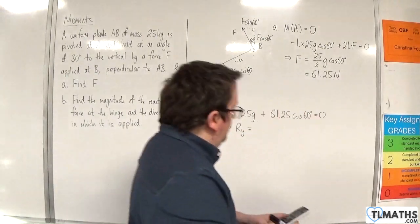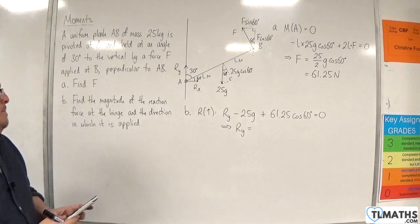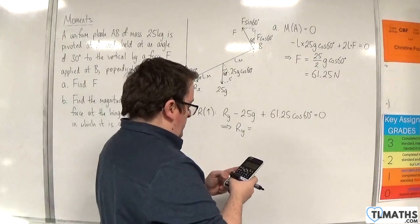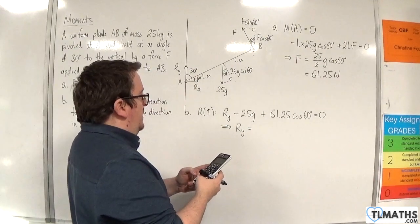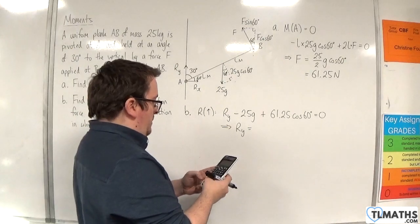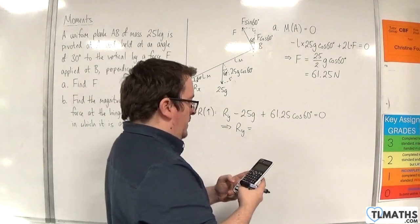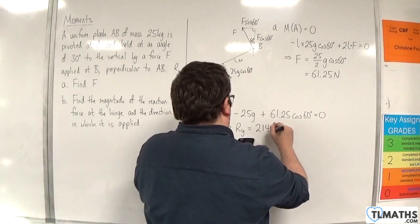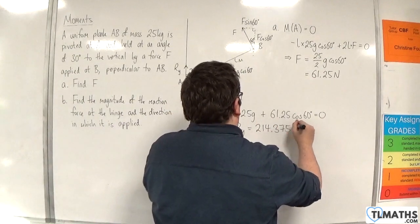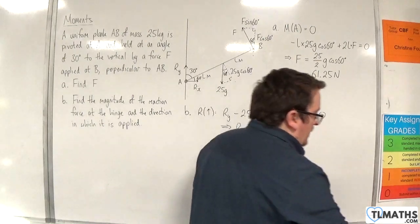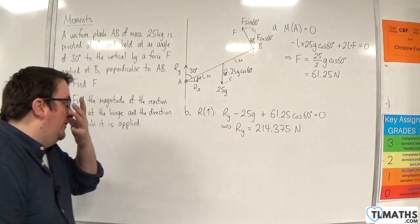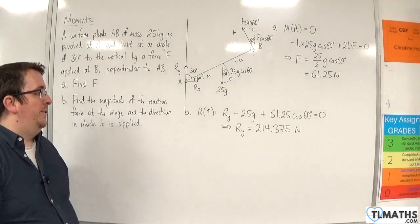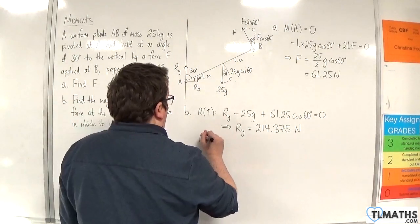R_Y is going to be 25 times 9.8 take away 61.25 times cosine of 60. We get 214.375 Newtons. That is the vertical component of the reaction force at the pivot.